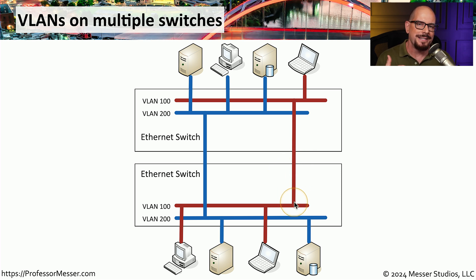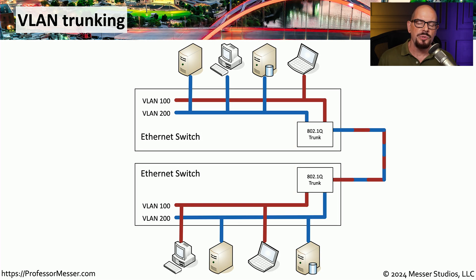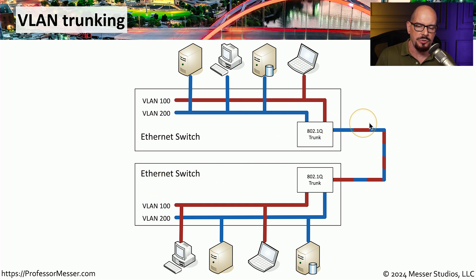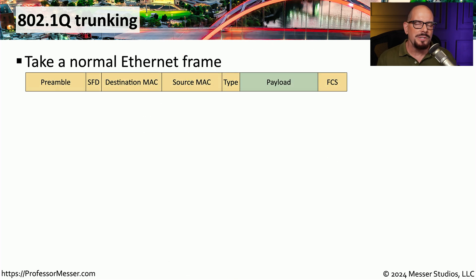So instead, we should find a way to connect these switches together using a minimum of physical connectivity. We can do this by implementing a VLAN trunk, also referred to as an 802.1Q trunk or a .1Q trunk. Instead of having multiple ethernet connections between VLANs, we have a single ethernet connection between the two switches, configured as a trunk interface. Anything sent from VLAN 100 or VLAN 200 across this trunk will be dropped off onto the appropriate VLAN on the other side.